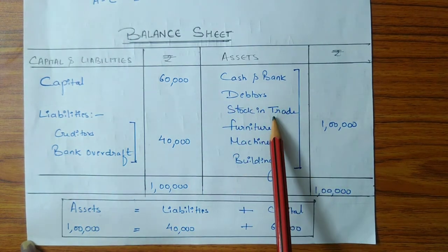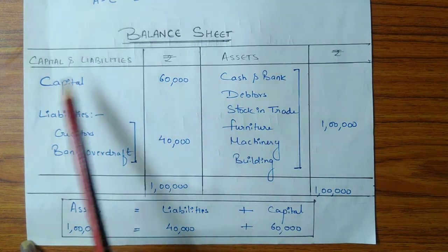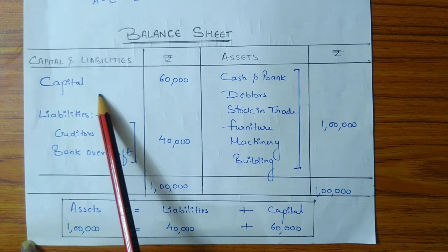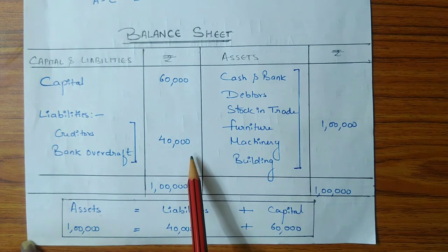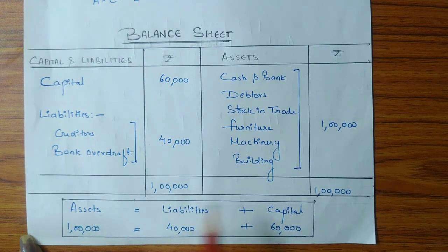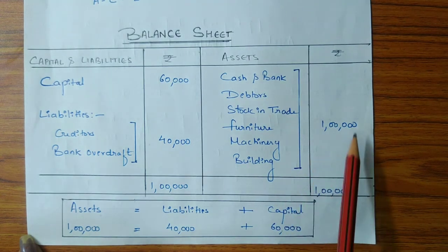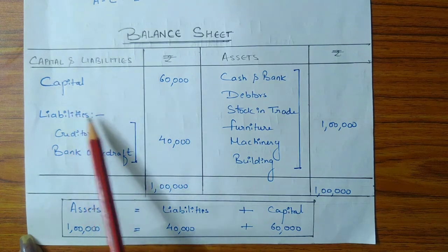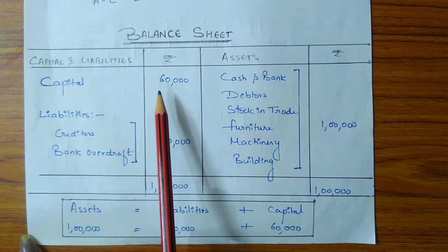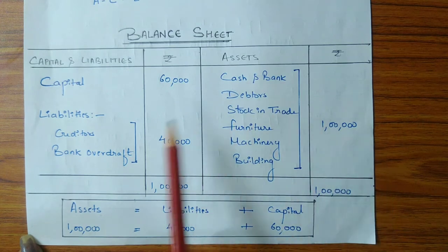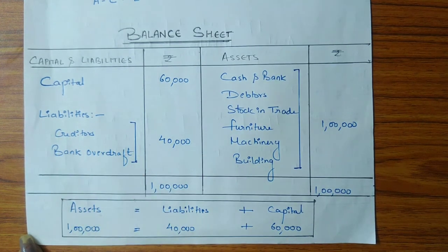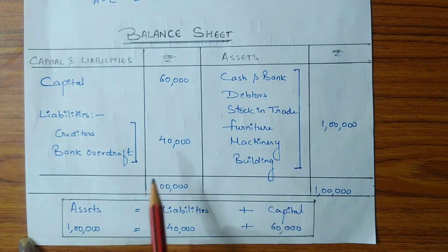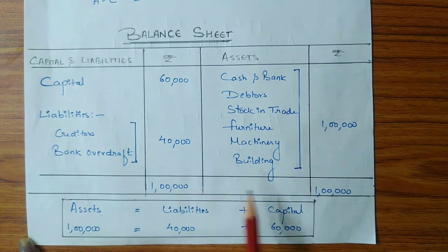So in the balance sheet, assets and liabilities columns are always equal because business assets are purchased either from capital — the amount invested by the proprietor — or from funds borrowed from external parties. For example, in this balance sheet there are total assets worth ₹1,00,000, out of which ₹60,000 worth of assets have been purchased from capital provided by the proprietor and the remaining ₹40,000 from funds provided by external parties. The balance sheet balances when assets equal liabilities.